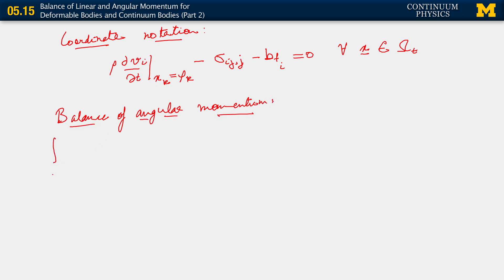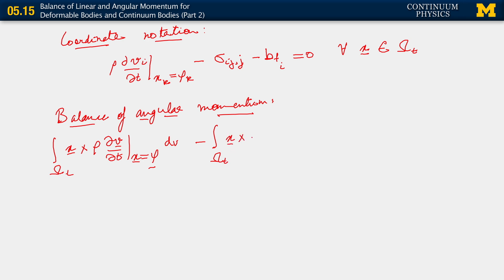The form that we had was the following: integral over omega t of x cross rho times the material time derivative of the velocity, dv. Let me now take the extra step of moving everything to the left-hand side. So this is the moment coming in from the body force minus the moment that arises from the surface tractions.